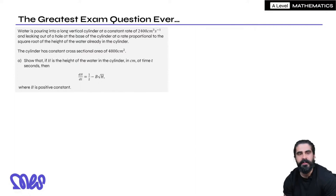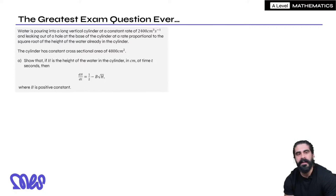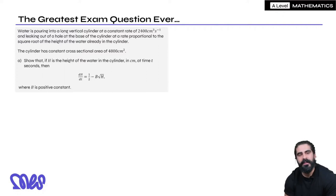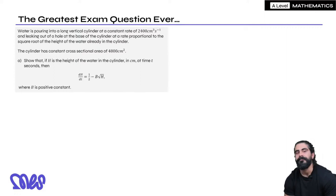The question says: water is pouring into a long vertical cylinder at a constant rate of 2400 centimetres cubed per second, and leaking out of a hole at the base at a rate proportional to the square root of the height of the water already in the cylinder. The cylinder has a constant cross-sectional area of 4800 centimetres squared. Show that if h is the height of the water in centimetres at time t seconds, then dh/dt = ½ − b√h, where b is a positive constant.